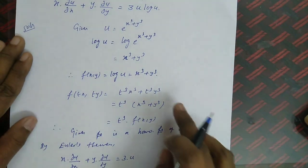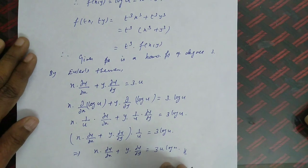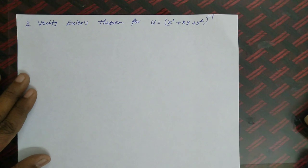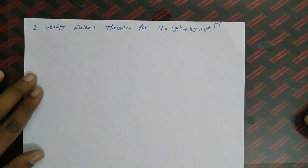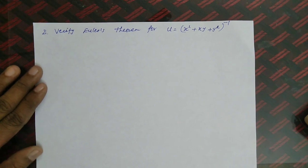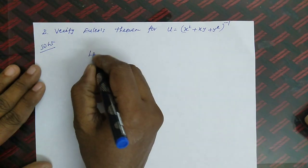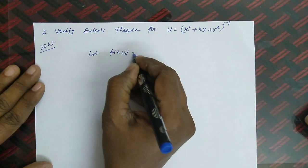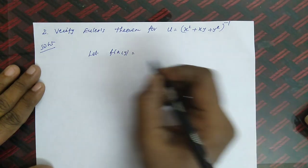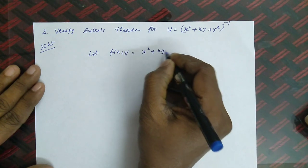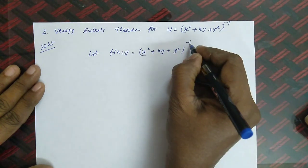So the approach is: first check the homogeneous property, then apply Euler's theorem to get the answer. The next problem is: verify Euler's theorem for u = (x² + xy + y²)^(−1).